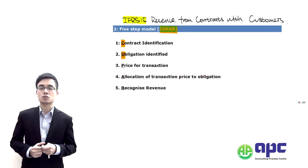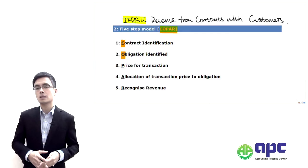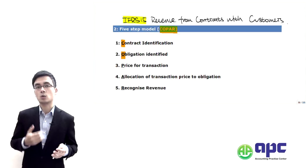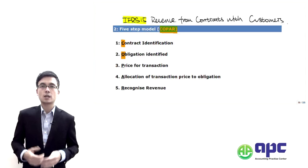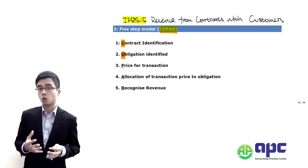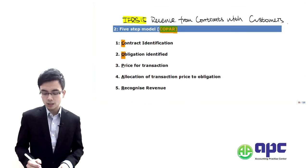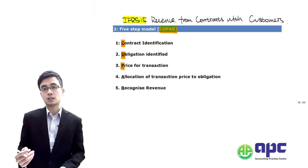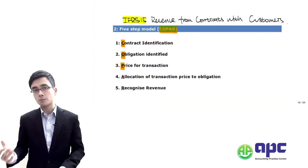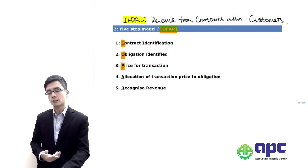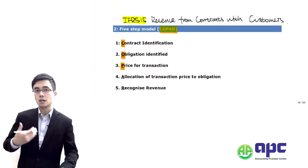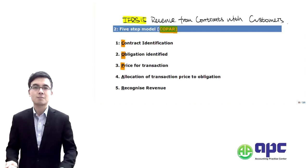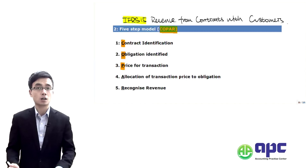You need to identify those obligations so that you can determine whether the selling price or revenue is correct to be recognised for all of these performance obligations. Step three is to determine the transaction price. In some circumstances, we're going to use the expected value method — a weighted average method — to determine that transaction price. We'll see a detailed example in the second part of this course.